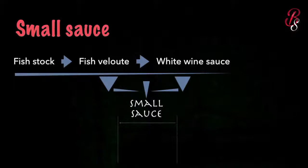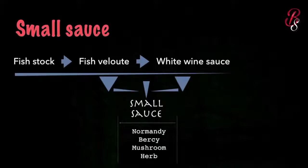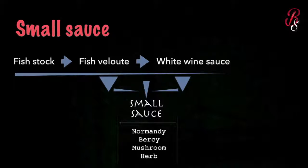A leading sauce plus additional flavor equals a small sauce. Small sauce examples from fish stock include Normandy, Bercy, mushroom, and herb sauces. For example, to make a mushroom sauce: mix fish velouté and white wine sauce together, then add mushroom while cooking the process. The sauce name is mushroom, so 90 percent of the flavor must come from mushroom, with the rest being fish velouté and white wine sauce.